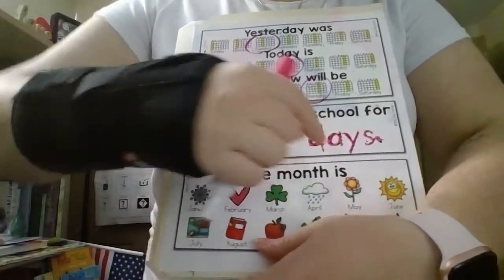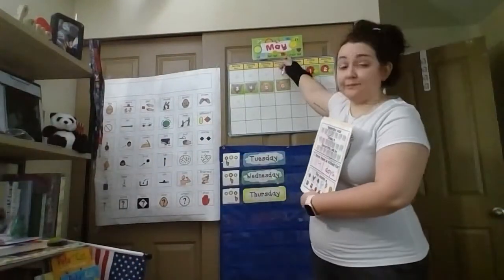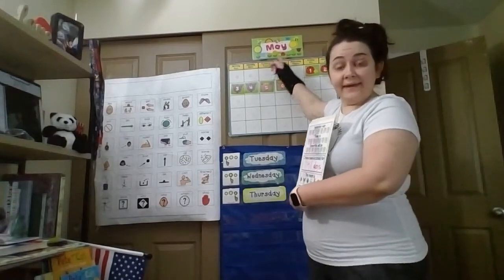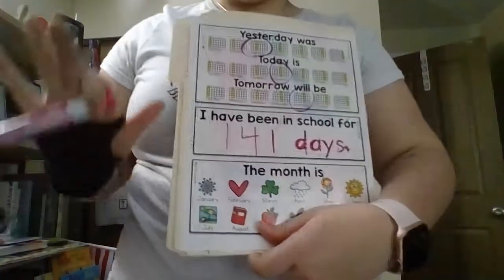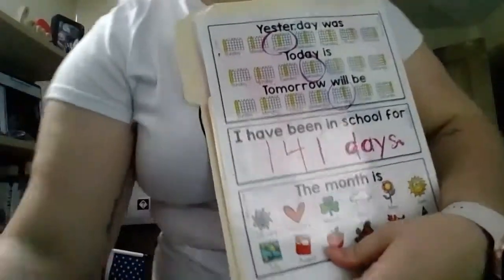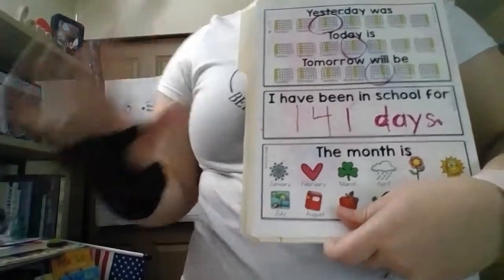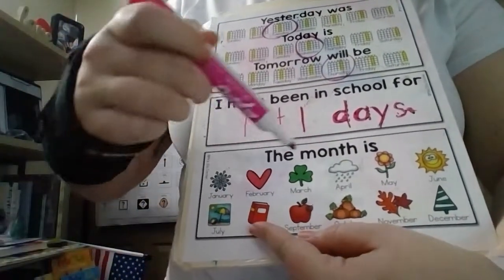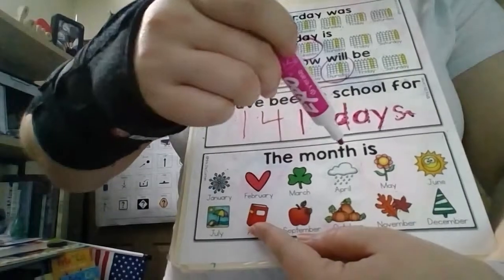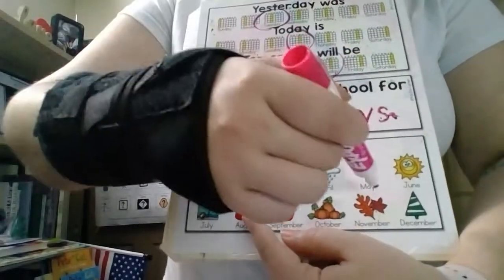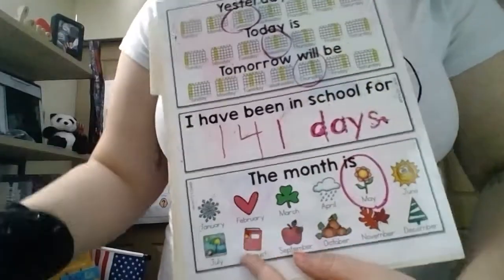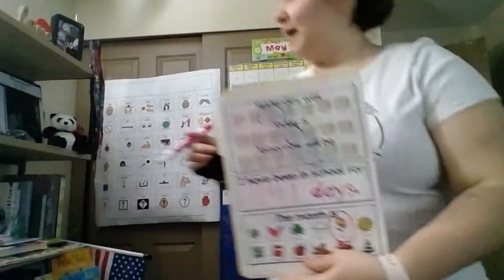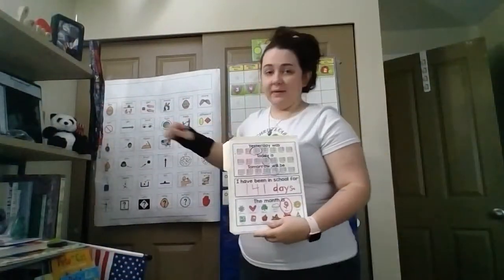The month is — what month are we in? May. May is the fifth month. Let's count five to get to May. Ready? One, two, three, four, five. May has a flower because lots of things grow in May. Turn the page.